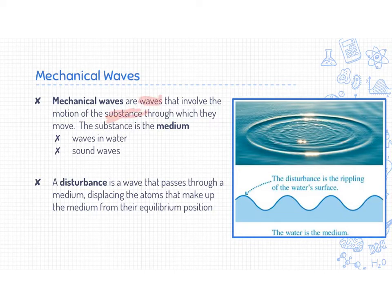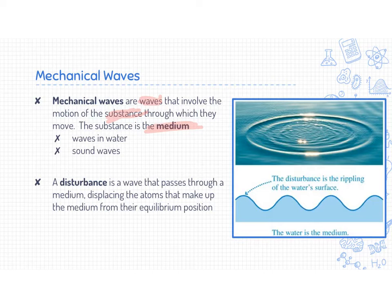In the picture on the right we have a water wave. The disturbance was caused maybe by a rock being thrown into the water, and that creates energy that propagates outward from where it hit. The disturbance is the rippling of the water's surface, and the water itself is the medium. Right now as I'm talking, I'm manipulating the air molecules around me starting with my larynx, and that's how sound travels — the medium is air.